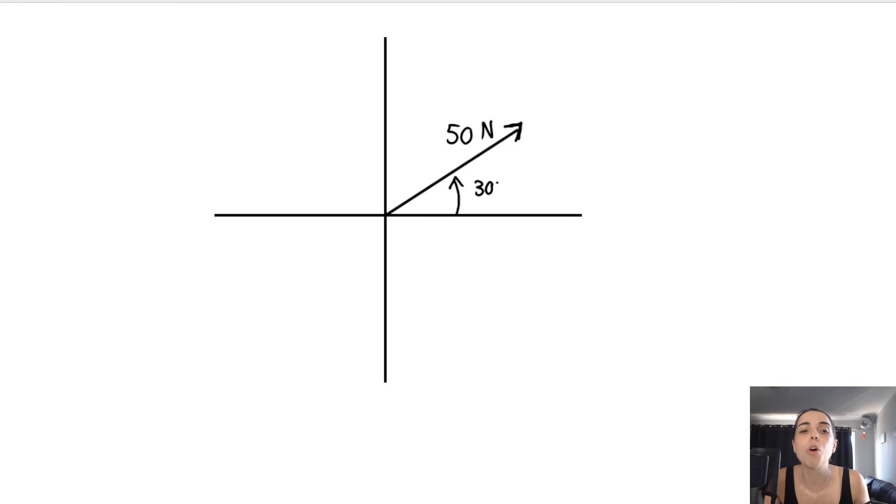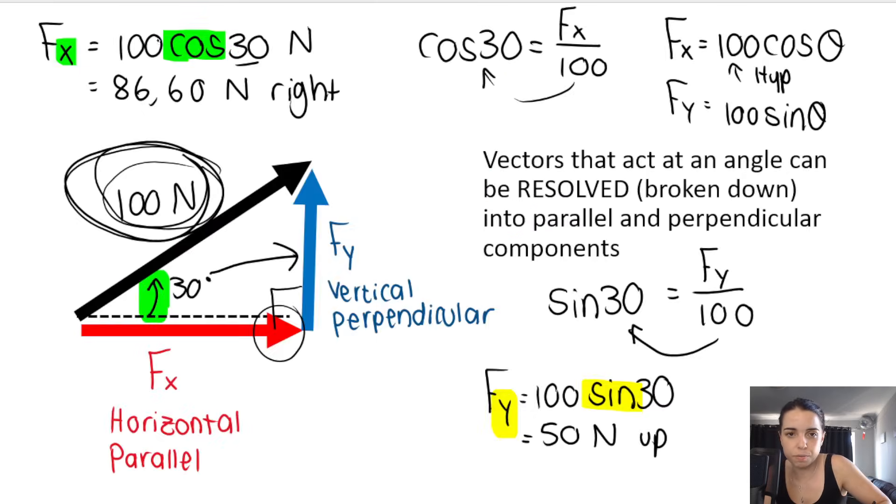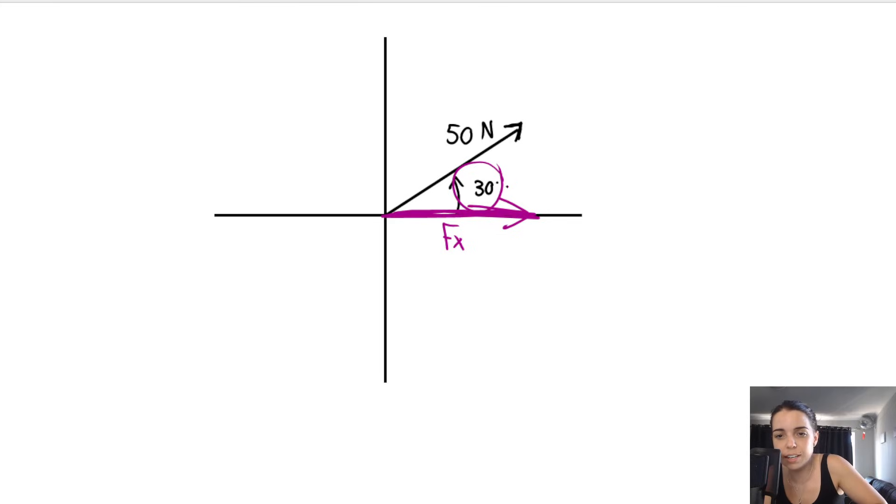If I'm looking for the horizontal component, the x component, I'm looking for this component over here. And again, you use cos. Just like I said, you use cos because it's next to it, it's adjacent. So 50 cos 30—that will get you the x component. To get the y component, it's this one, it's going up. You use opposite, so you use sine. So fy is 50 sine 30.